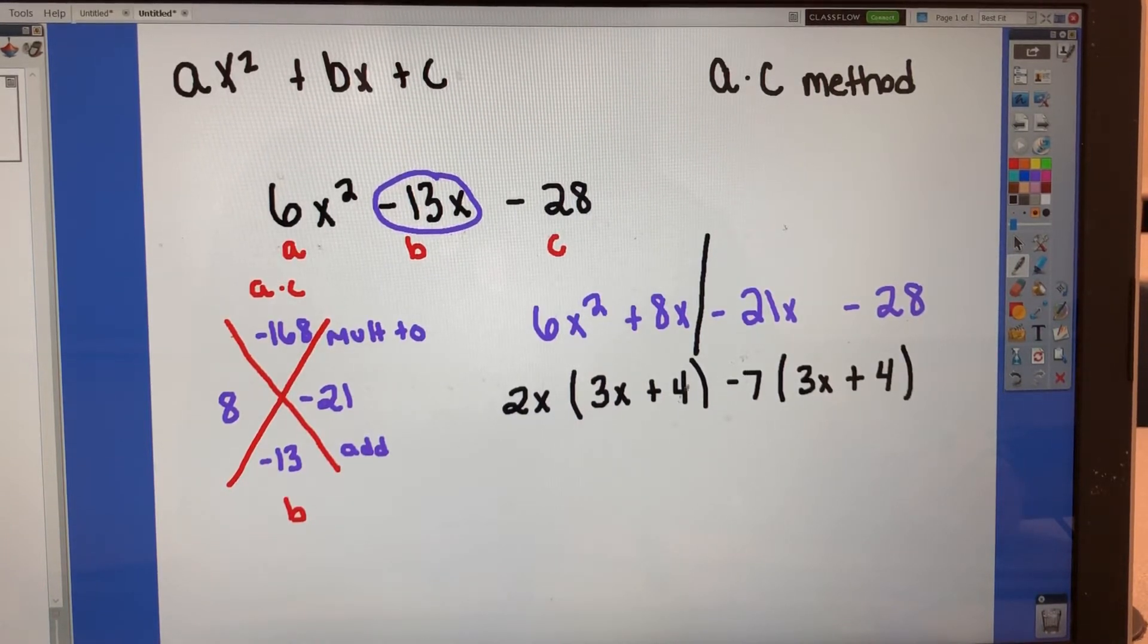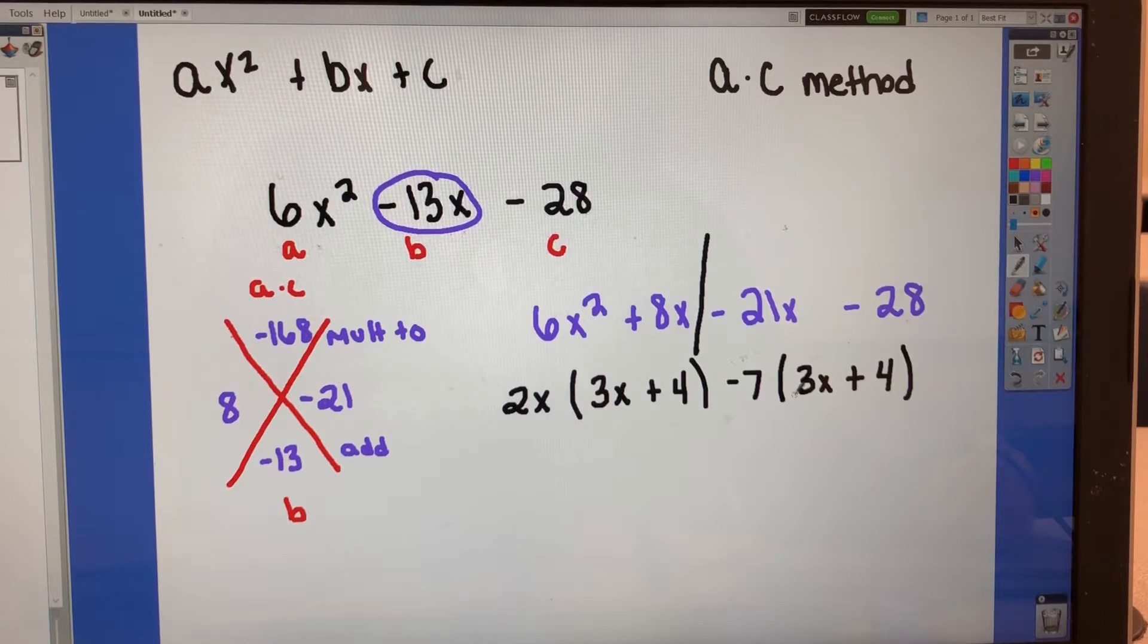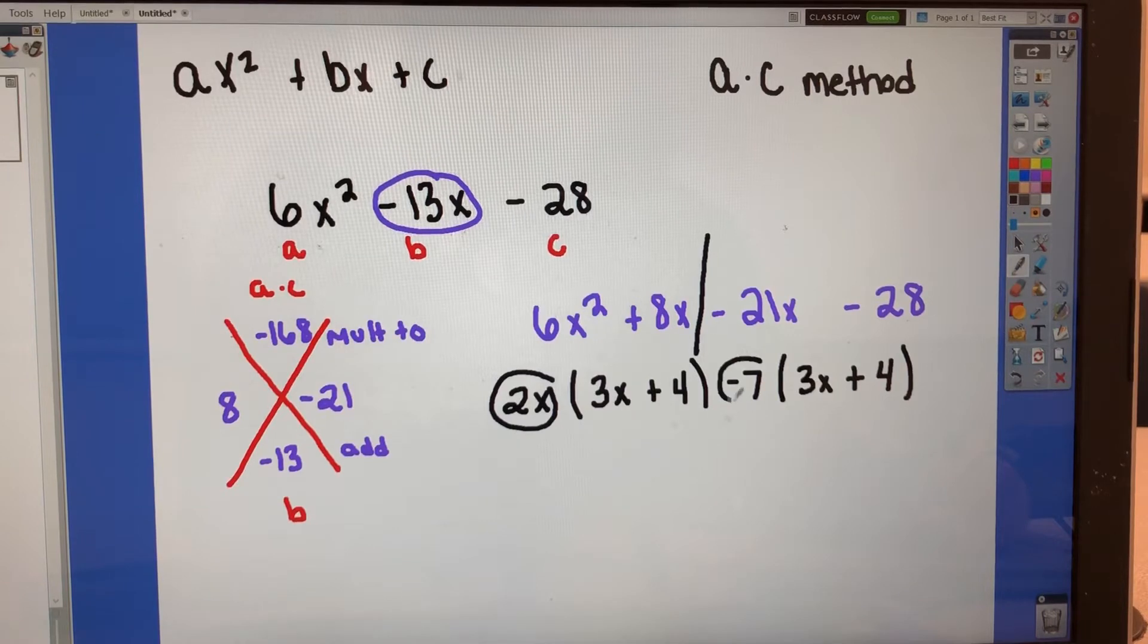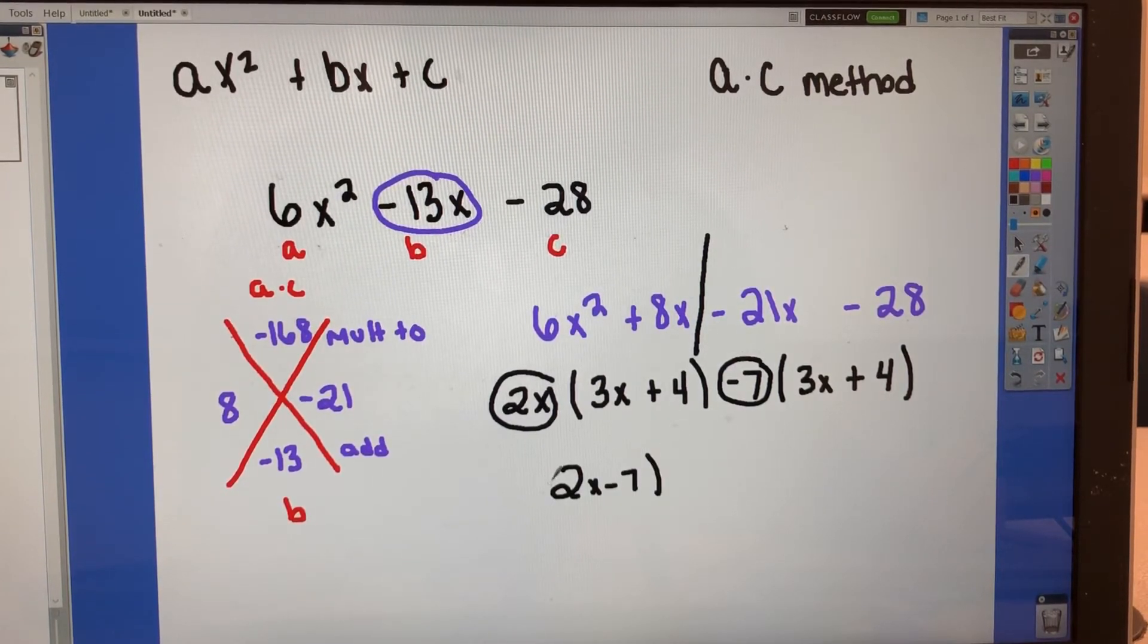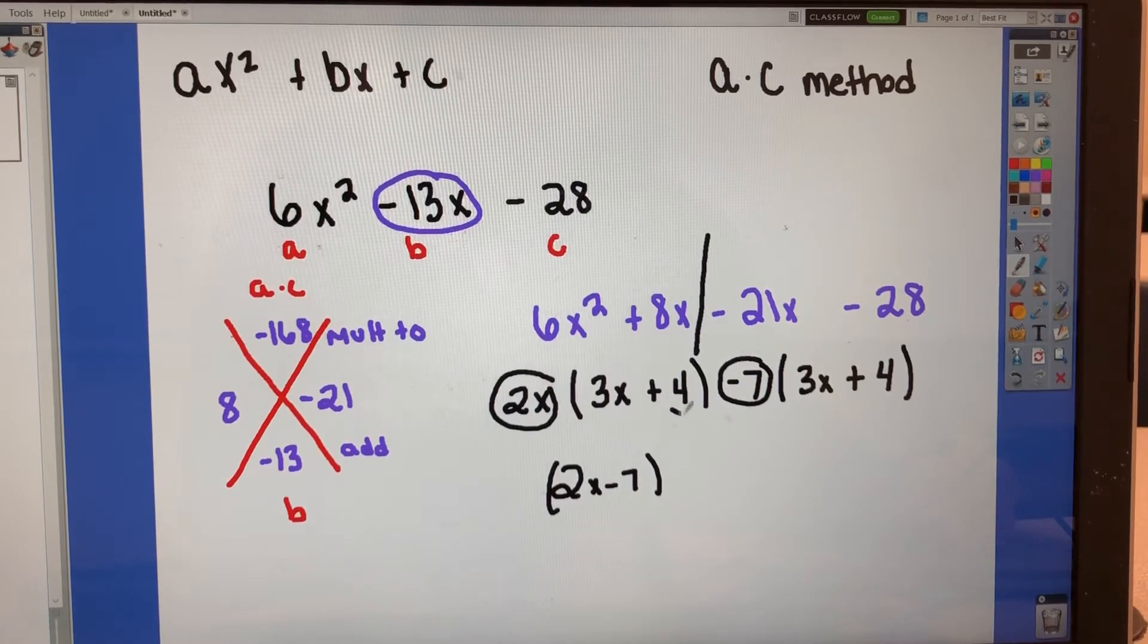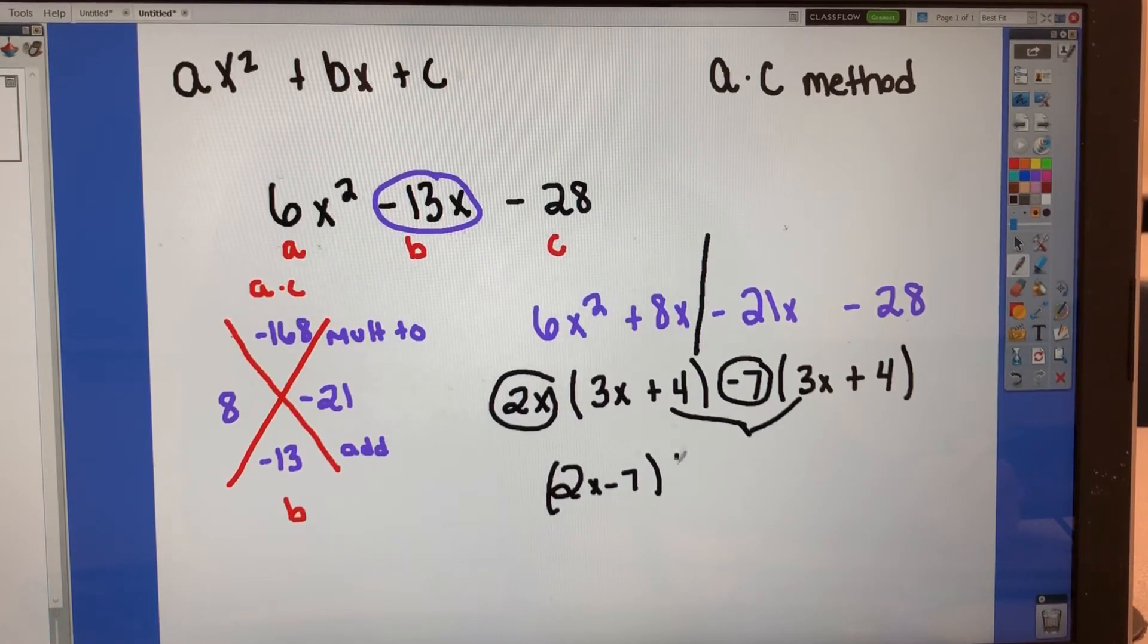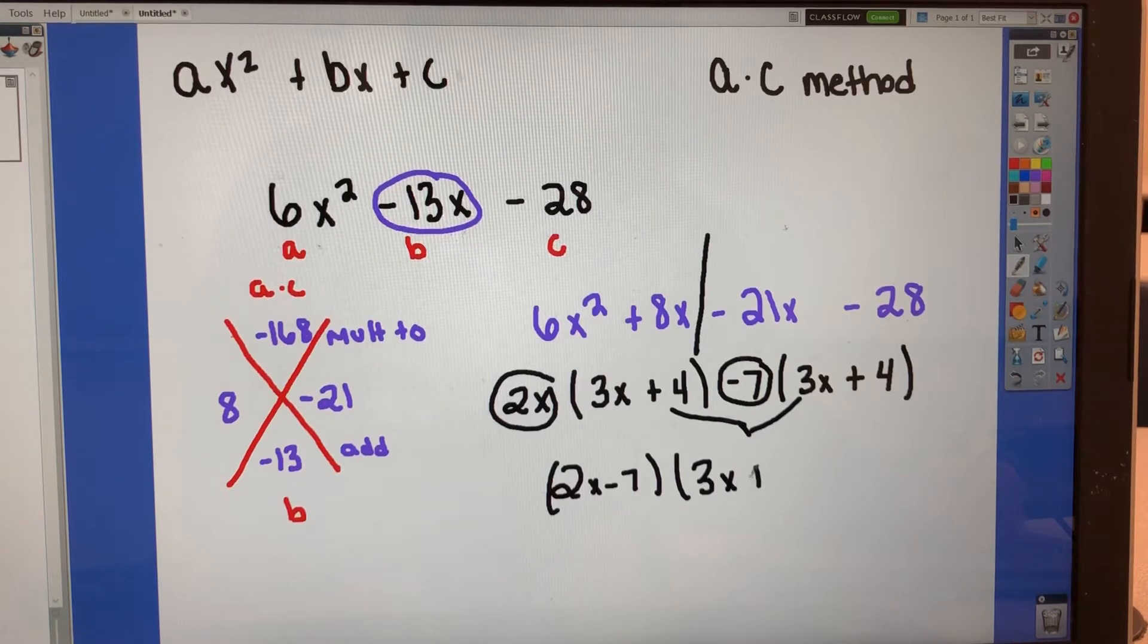And I took the negative out because I want these two guys to be the same. Because if I'm factoring by grouping, these get my group. I get a 2x minus 7. And then essentially what I'm doing is I'm factoring out a 3x plus 4. So these get one factor on their own. 3x plus 4.